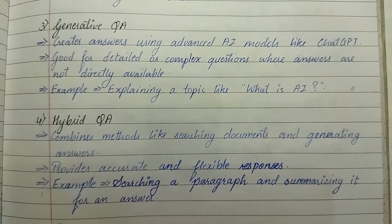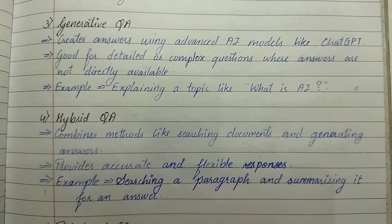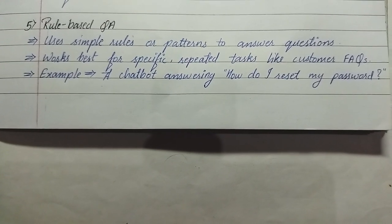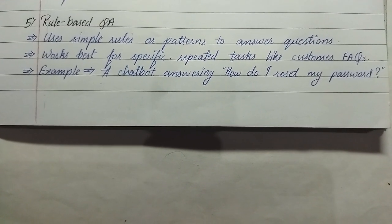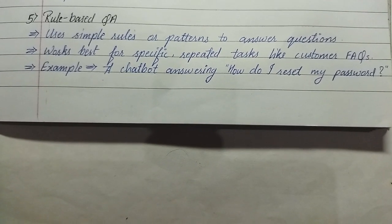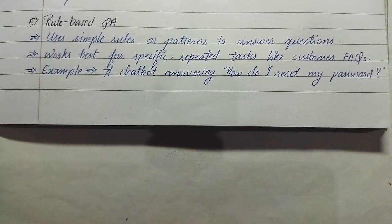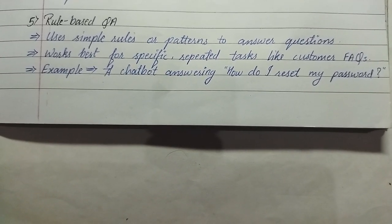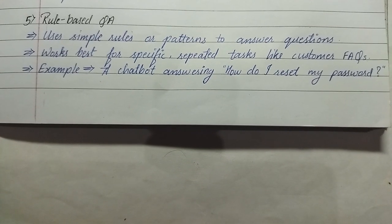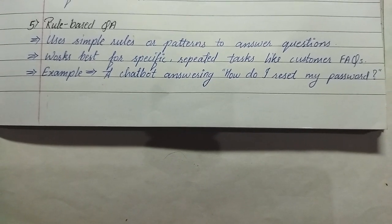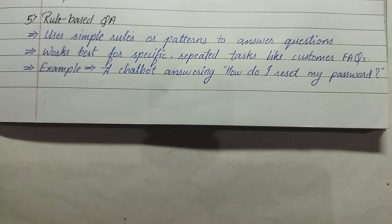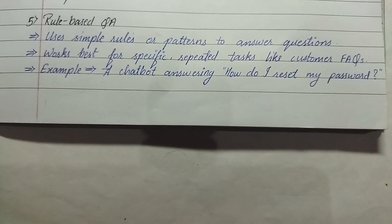Fifth is rule-based question answering. It uses simple rules or patterns to answer questions and works best for specific repeated tasks like customer FAQs. An example is a chatbot answering 'How do I reset my password?'